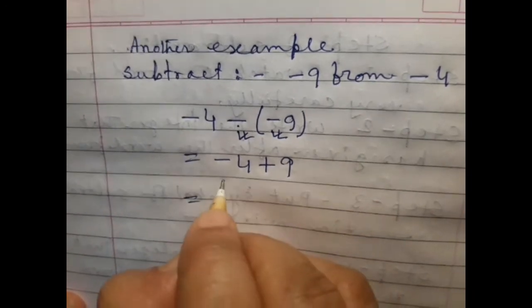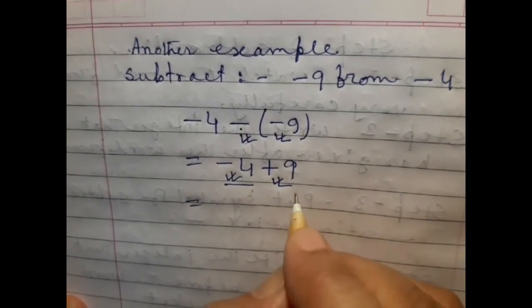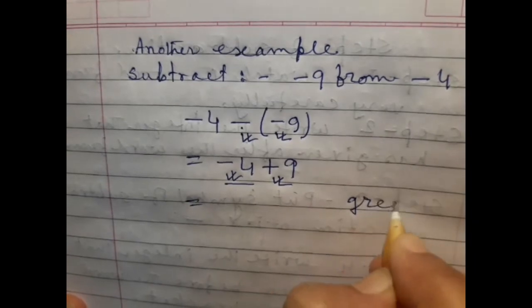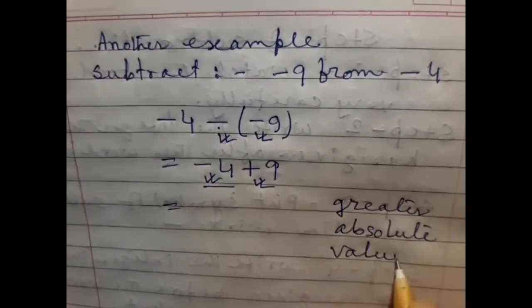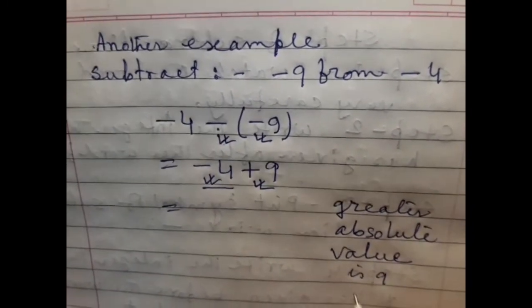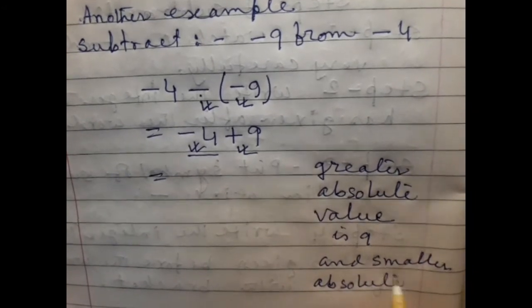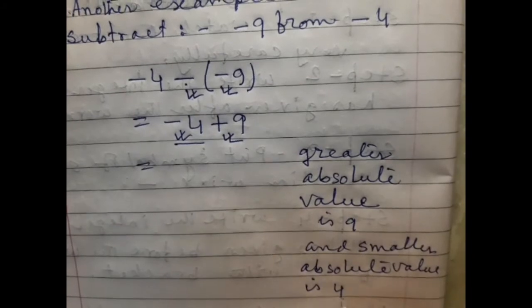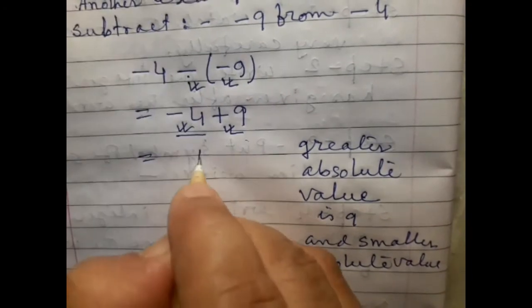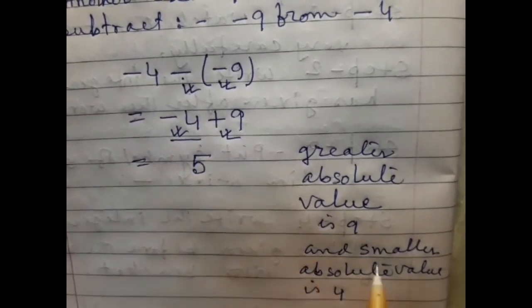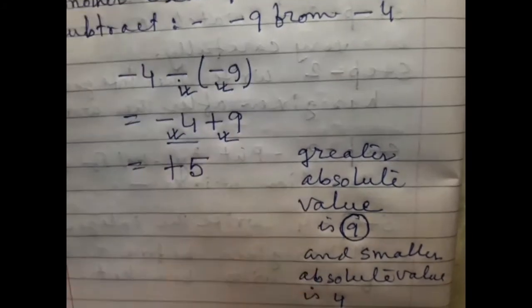And there is two different symbols. This is minus and this is plus. So we subtract here. The greater absolute value is 9 and smaller absolute value is 4. So from 9 we subtract 4. Result is 5. What will be the prefix? Greater absolute value is from positive integer. So prefix will be plus.